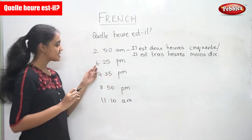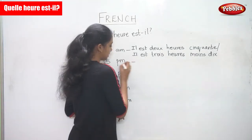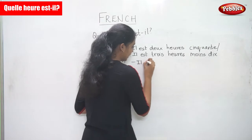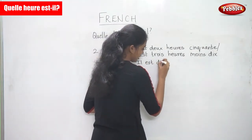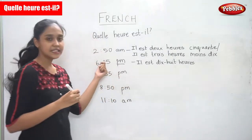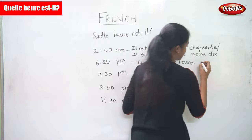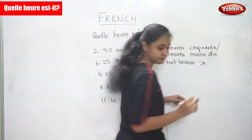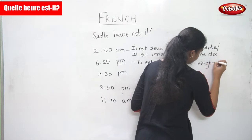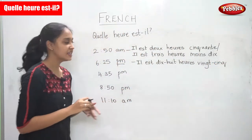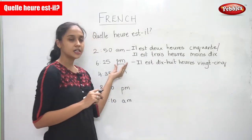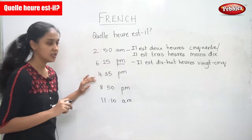The next one is 6:25 PM. Since it is PM, 6 would be 18 hours. So 'il est dix-huit heures.' It is with 'heures.' 18 hours and 25 — twenty-five. So it is 'dix-huit heures vingt-cinq.' So why is it eighteen hours here? Because it is given that it is PM.